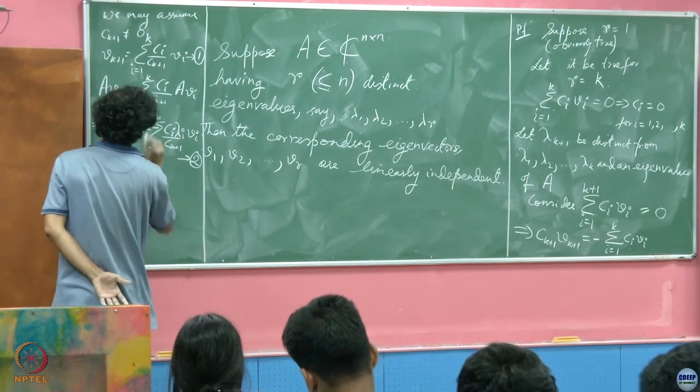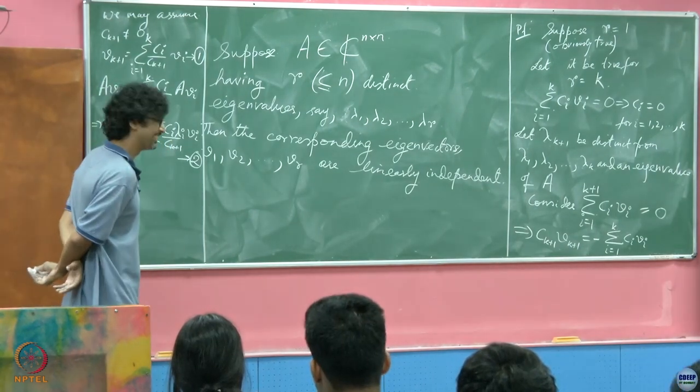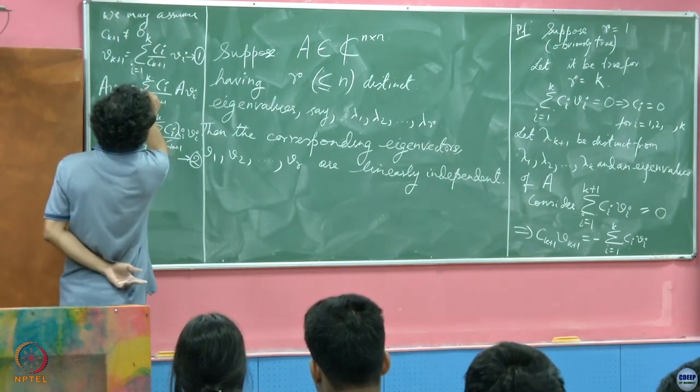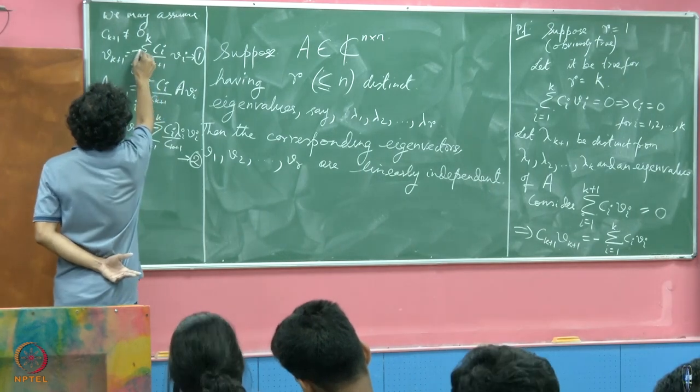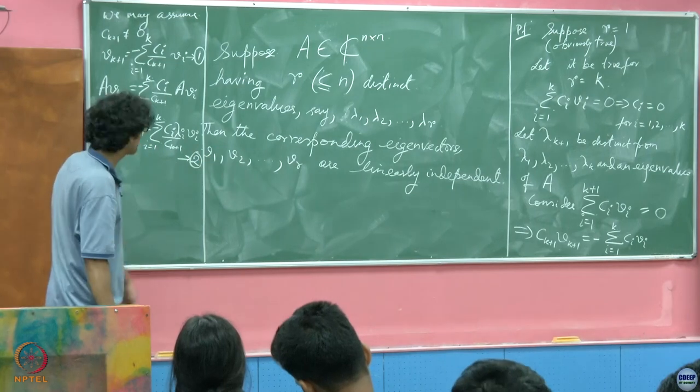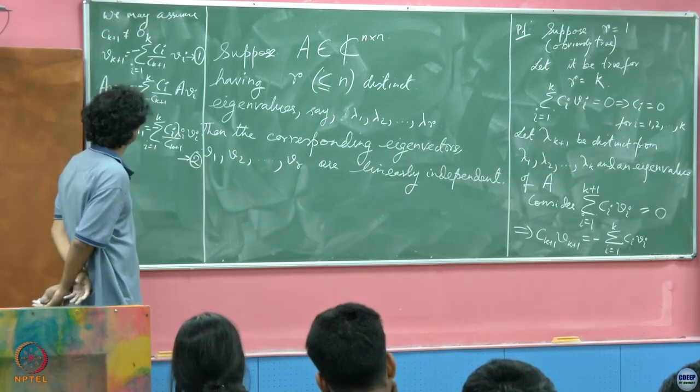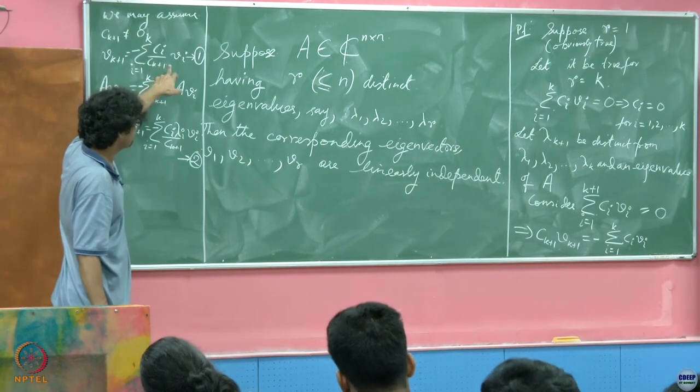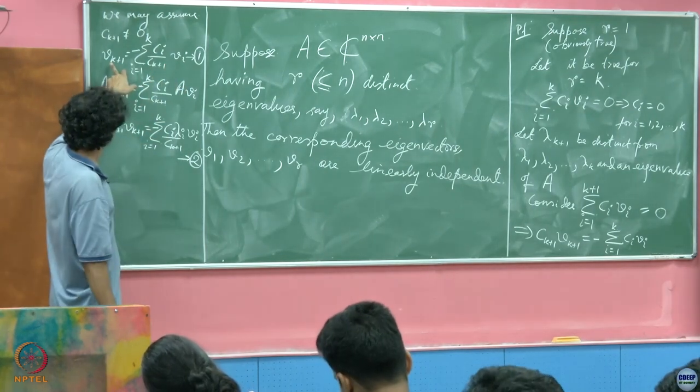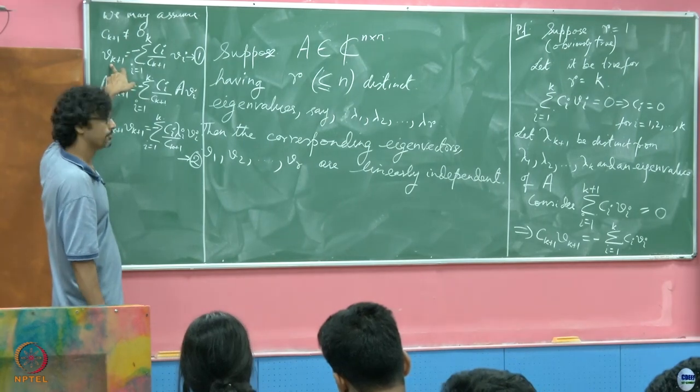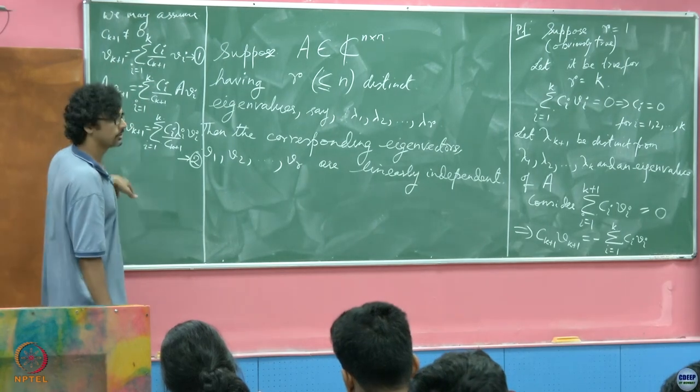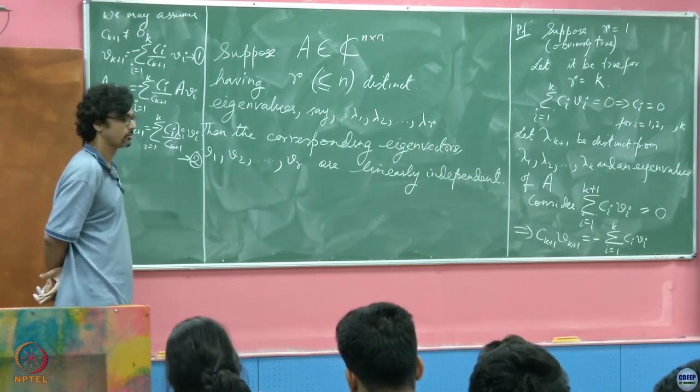The minus sign does matter, thank you. Here also you need that. If I had gone ahead, I would have just subtracted it. So this is true, equations 1 and 2. Suppose I multiply 1 with lambda k+1 and subtract these two fellows. What happens?